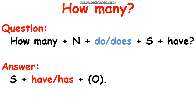For the answer, the form is: subject plus 'have' or 'has' plus object. Do you still remember how to use 'have' and 'has'? We use 'have' with I, you, we, and they. We use 'has' with he, she, and it. For example, 'she has two eyes' or 'they have one nose'. This is the difference between 'have' and 'has'.